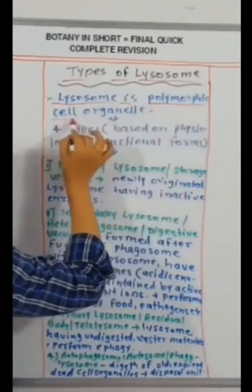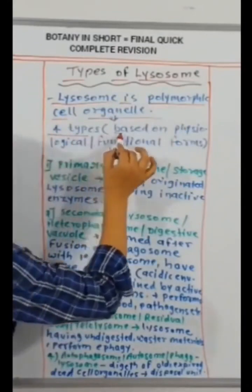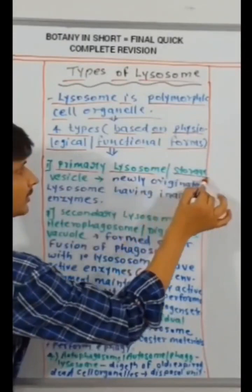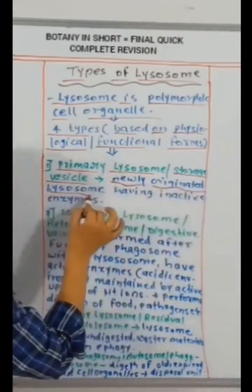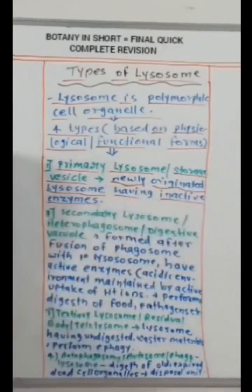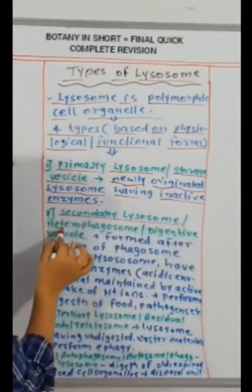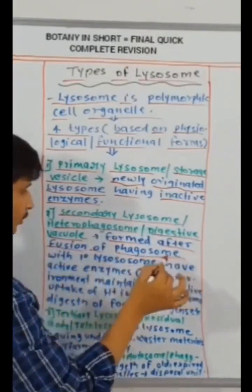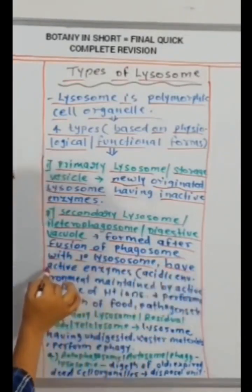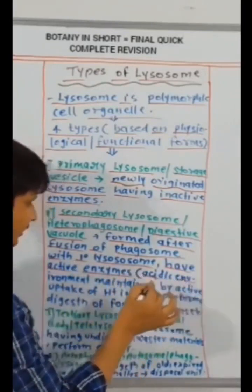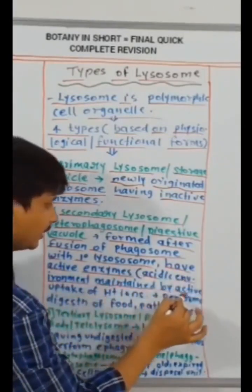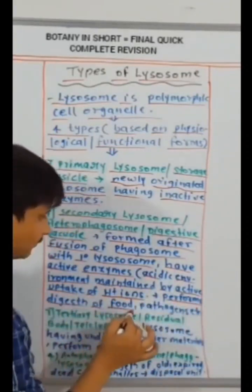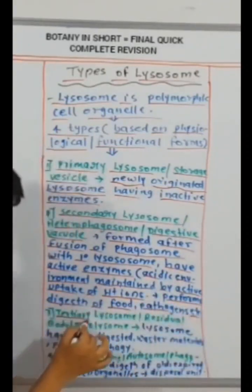Types of lysosomes. Lysosome is polymorphic cell organelle. Four types, based on physiological and functional forms. Primary lysosome, storage vesicle. Newly originated lysosome having inactive enzymes. Secondary lysosome, heterophagosome, digestive vacuole. Formed after fusion of phagosome with primary lysosome, have active enzymes. Acidic environment maintained by active uptake of proton ions. Performs digestion of food, pathogen except for tertiary lysosome.